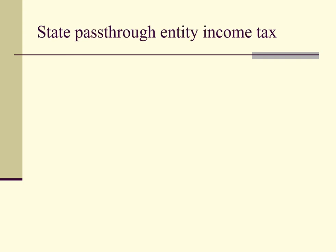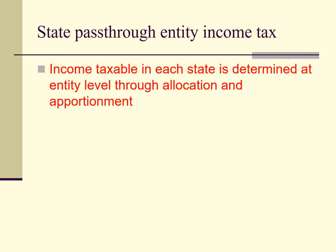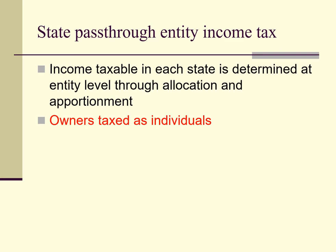Let's talk briefly about pass-through entities. As discussed above, in the case of multi-state business operations, states tax individuals on income allocated and apportioned to those states. Where business operations are carried on by a pass-through entity, such as a partnership, limited liability company, or S-corporation, the amount of income sourced in a particular state is determined at the entity level. The entity-level determination is passed through to the individual owners, who are then taxed by the states in the same manner as if the income was earned directly by those individuals.